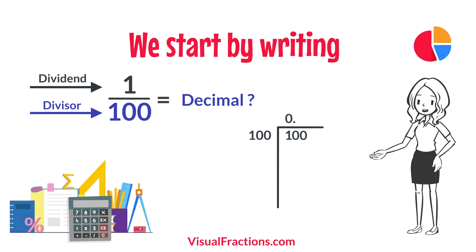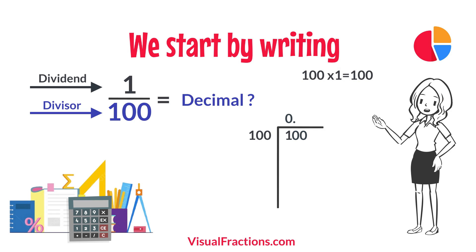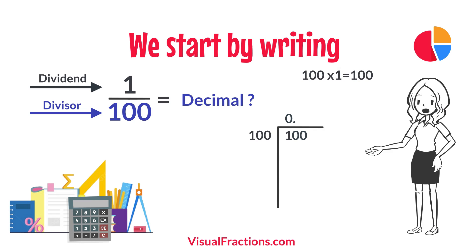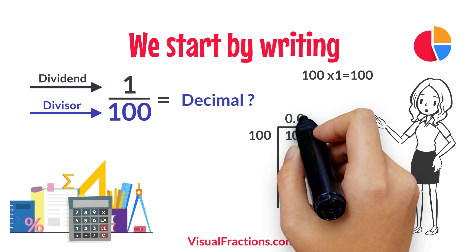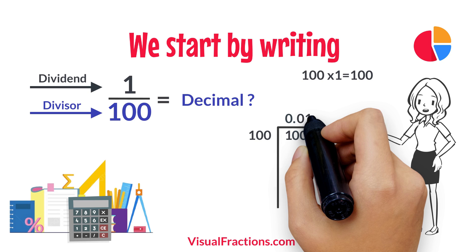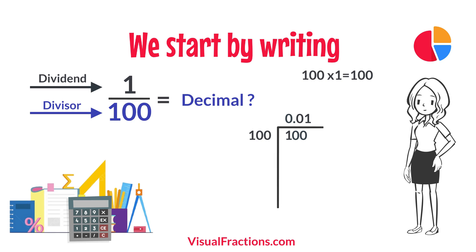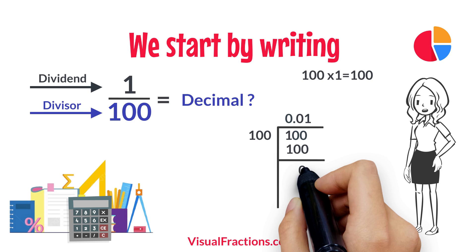How many times does 100 go into 100? Exactly once. We write 1 after the decimal point in the quotient, followed by another 0, making it 0.01. Multiplying 1 by 100 gives us 100. When we subtract 100 from 100, we get a remainder of 0.